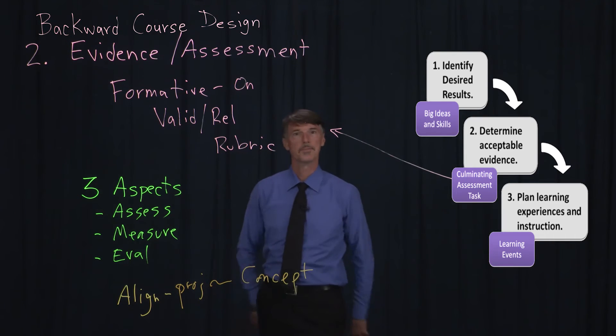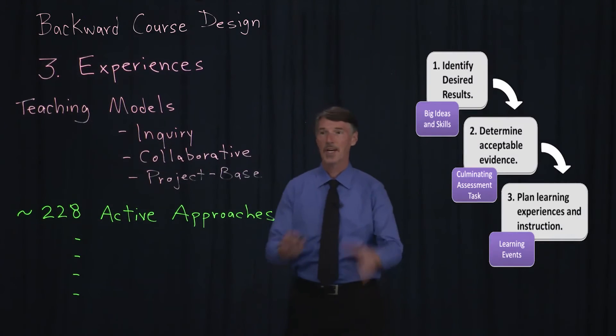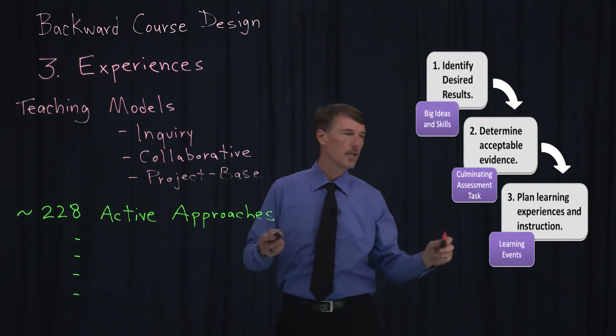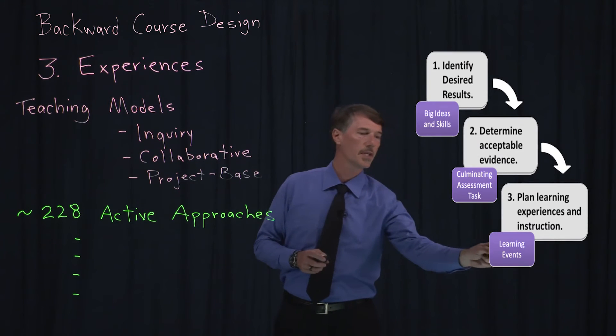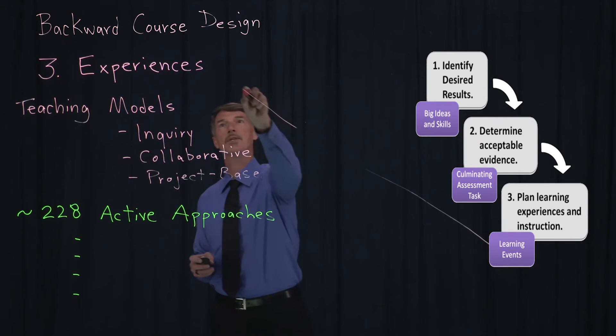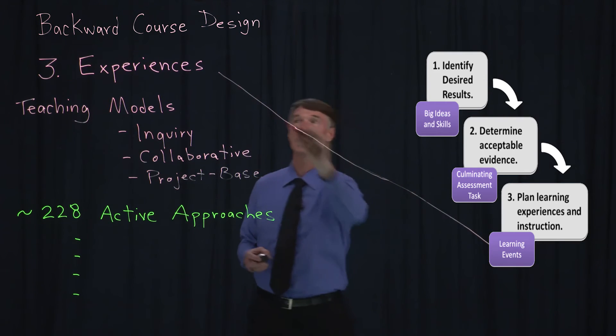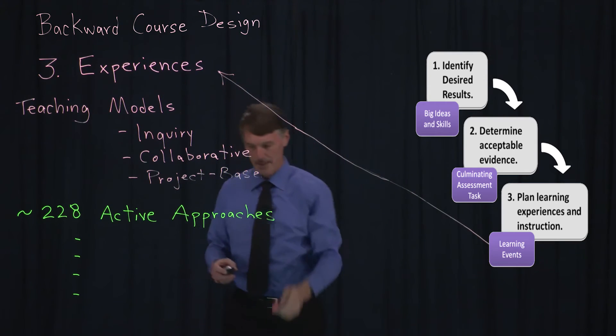And finally, for the third step of the course design, backward design model will be looking at the actual experiences. Many times we use this as the first step when we start to talk about what are the things that we need to do in the class. But obviously if we take that approach, then sometimes we miss our target.